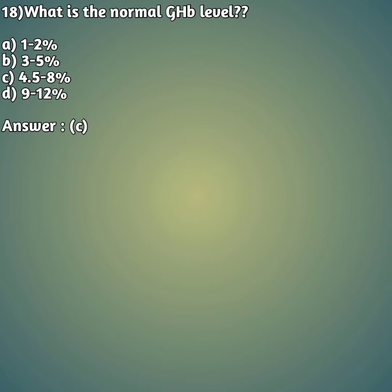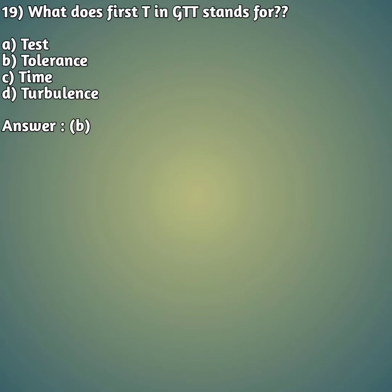Question 19: What does the first T in GTT stand for? Option A: test, option B: tolerance, option C: time, option D: turbulence. The full form of GTT is glucose tolerance test, so the first T stands for option B, tolerance.